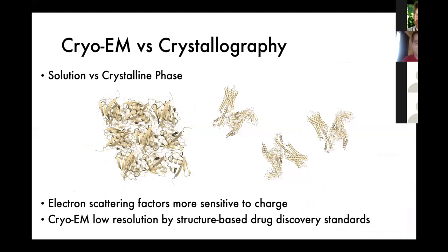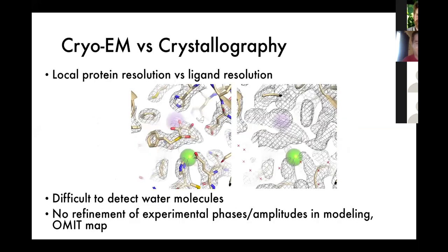In crystallography you're looking at a crystalline phase measurement where everything is packed into an ordered lattice, whereas in cryo-EM you're doing a solution phase measurement of just the conformational ensemble in solution. In crystallography the scattering factors are relatively insensitive to atomic charge, which isn't really the case in cryo-EM. Generally speaking, cryo-EM maps, while people are pushing to higher resolutions, are still relatively low by structure-based drug discovery standards. Even if you have a very good local protein resolution, the resolution of the ligand is oftentimes relatively poor by comparison.